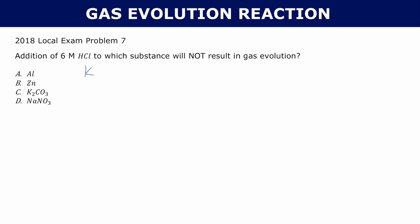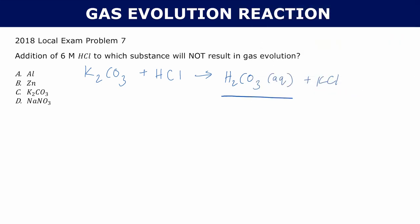Let's start with C: K₂CO₃. If we add 6 molar hydrochloric acid to this, a double displacement reaction occurs. The hydrogen pairs up with the carbonate to form H₂CO₃ (aqueous), and potassium pairs up with chloride to form KCl. One of our products is carbonic acid, which is an intermediate — it immediately decomposes into H₂O and carbon dioxide gas. So C is clearly not the answer, because it does produce a gas.